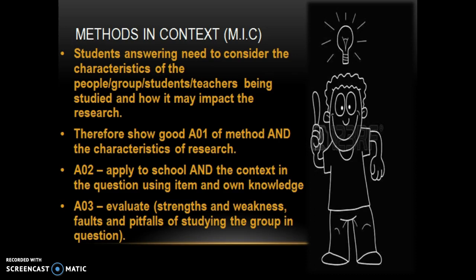This answer will need to show good AO1 of the method and the characteristics of the research. Students will also need to apply — that's AO2 — to the school context and the context in the question using the item and their own knowledge. They will also show a level of evaluation by giving strengths and weaknesses, faults and pitfalls of studying this group or groups in education.